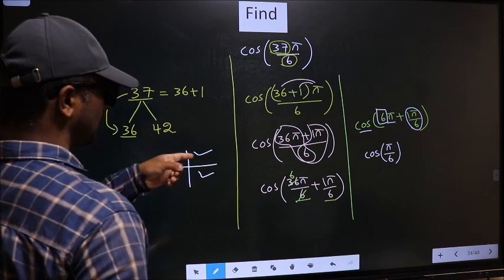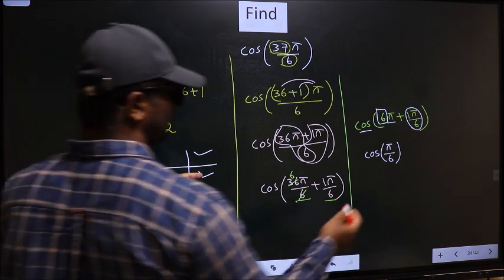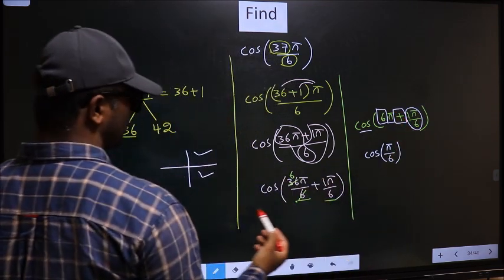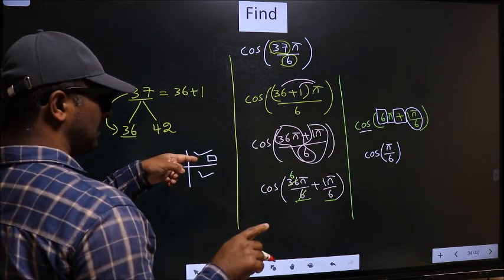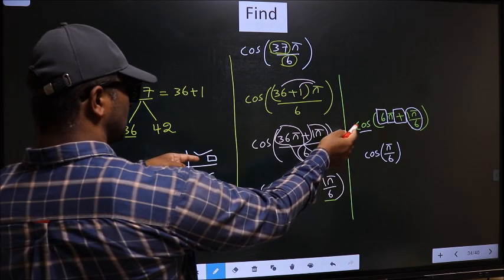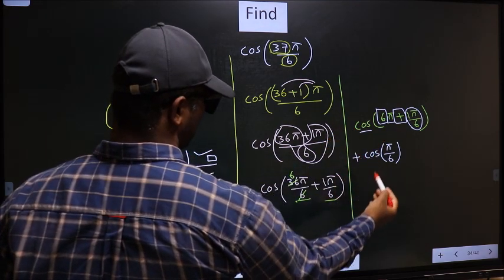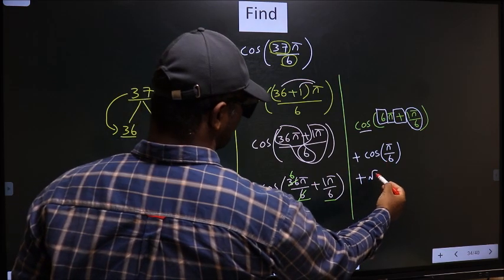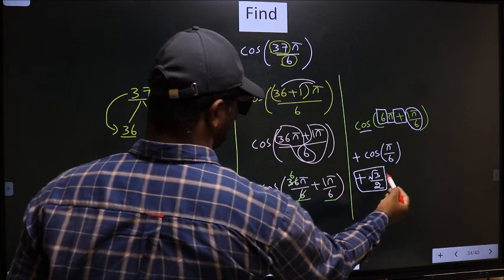Now to decide in which quadrant it lies, we should look at this symbol. Here we have plus, so the angle lies in the first quadrant. And in the first quadrant, cos is positive. So you should put plus. So plus cos(π/6) is √3/2. So this is our answer.